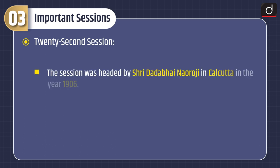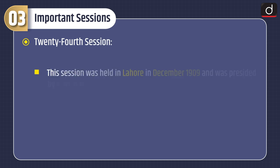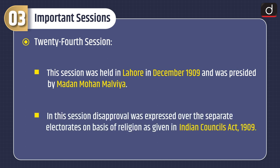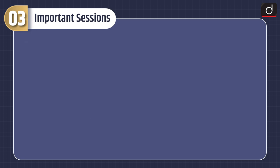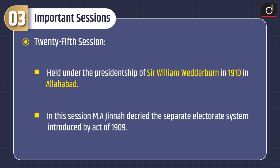Twenty-second Session: The session was headed by Dadabhai Naoroji in Calcutta in 1906. In this session, four resolutions were adopted: Swaraj, Self-Government, Boycott Movement, Swadeshi and National Education. Twenty-fourth Session: This session was held in Lahore in December 1909 and was presided by Madan Mohan Malviya. In this session, disapproval was expressed over the separate electorate on the basis of religion as given in the Indian Council's Act 1909. Twenty-fifth Session: Held under the Presidentship of Sir William Wadderborn in 1910 in Allahabad. In this session, M.A. Jinnah decried the separate electorate system introduced by the Act of 1909.